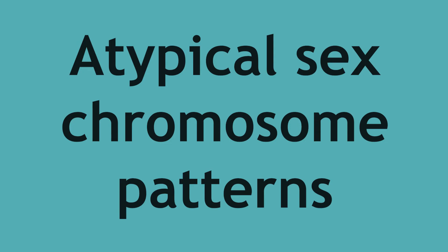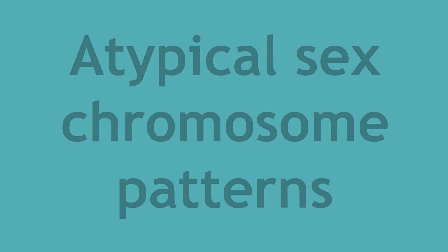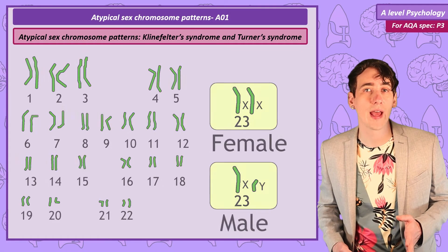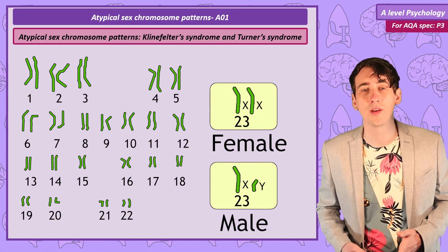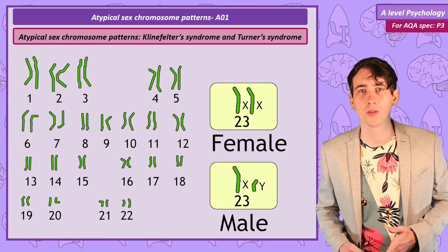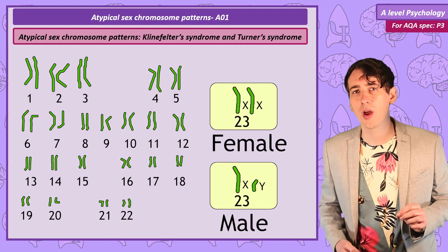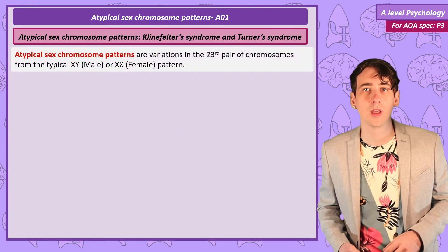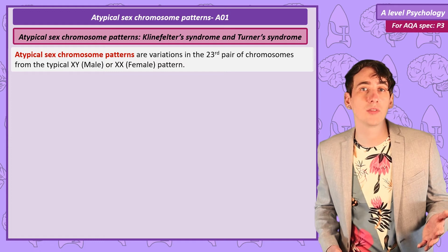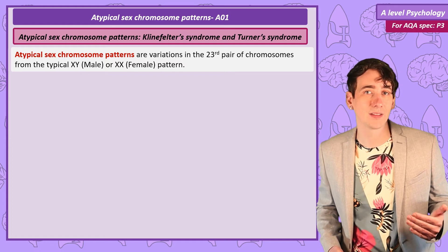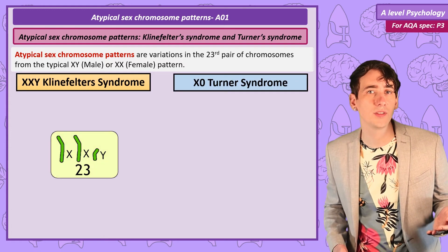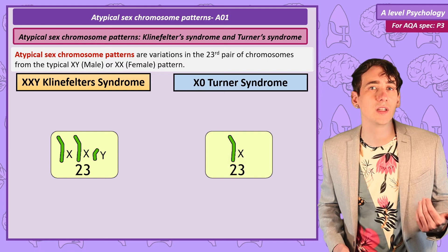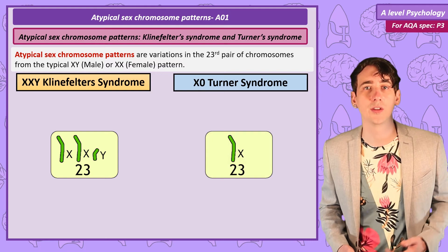Atypical sex chromosomes. Typically people either have an XX or XY 23rd pair of chromosomes, but there are rare atypical variations. Two that we need to cover here are XXY, a condition known as Klinefelter syndrome, and X0, a condition known as Turner syndrome.